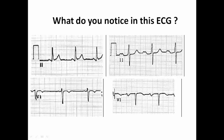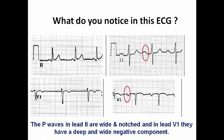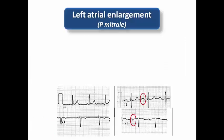Looking at this ECG, the P waves in lead 2 are wide and notched, and in V1 there is a deep and wide negative deflection greater than 1 mm in both duration and depth. This is left atrial enlargement on the surface ECG, compared to the normal ECG shown on the left side of the same image.